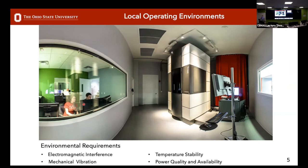Today's talk is about the Titan and the Themis. There's a lot of text on this slide listing the capabilities of each system. The major difference between our two systems is one is image-corrected and one is probe-corrected — one is optimized for HRTEM and the other for HRSTEM. I'll go through some of our capabilities and then talk about what that means in more depth.